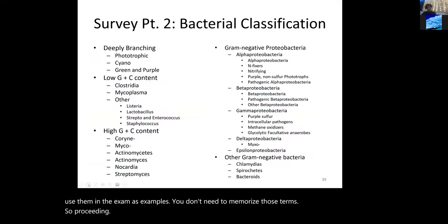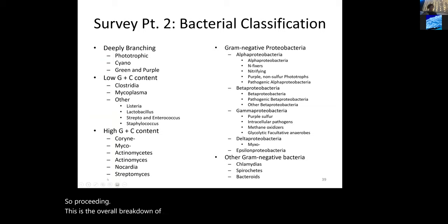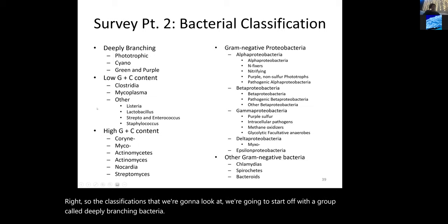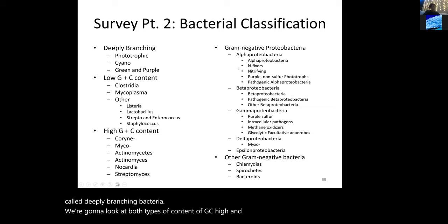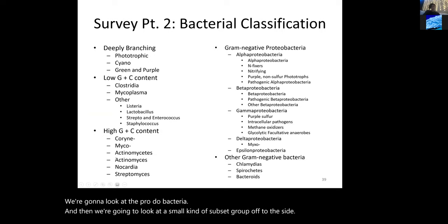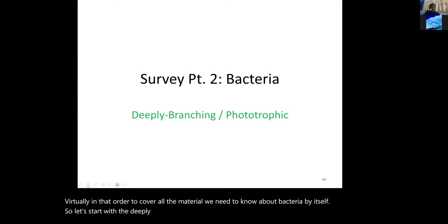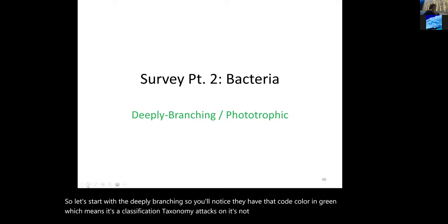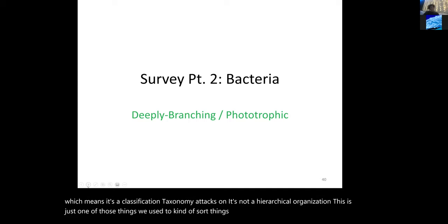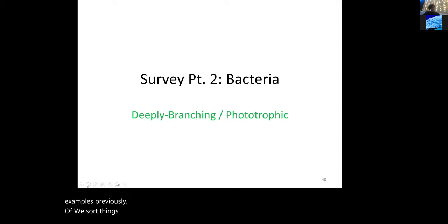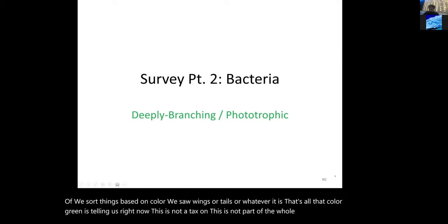Here is the overall breakdown. We'll start with a group called the deeply branching bacteria, then look at both high and low GC content groups, then proteobacteria, and a small subset group off to the side. The term 'deeply branching' is shown in green, meaning it's a classification — not a taxon, not part of the hierarchical organization of domains, kingdoms, phyla, and so forth.